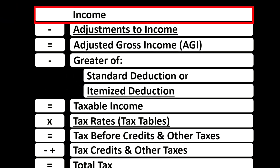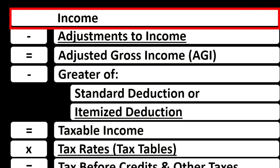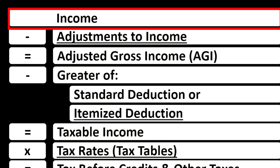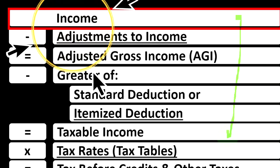Looking at the income tax formula, we're focused on line one income. Remember, the first half of the income tax formula is, in essence, an income statement, but just an outline, with other forms and schedules flowing into these line items. One of those is the Schedule E, which is, in essence, an income statement in and of itself.